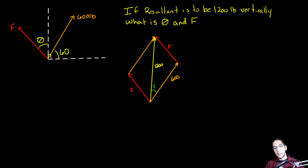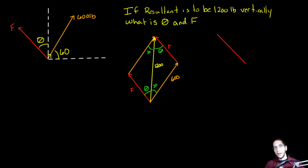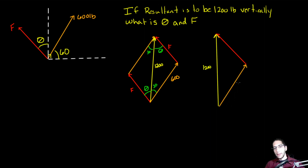From this we can fill in some angles. This angle right here is 60 degrees, so this interior angle must be 30 degrees because this is a right triangle. We know this angle is theta. The opposite angles tell us this side needs to be 30 degrees and this side needs to be theta. Drawing that triangle by itself, we have F, 1,200 pounds, and 600, with 30 degrees and theta labeled.